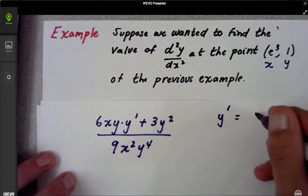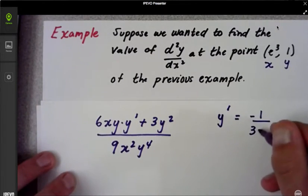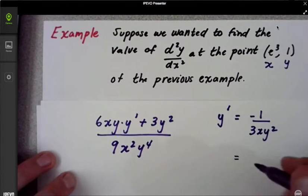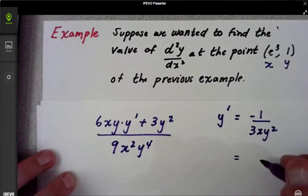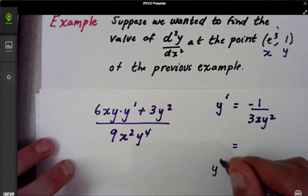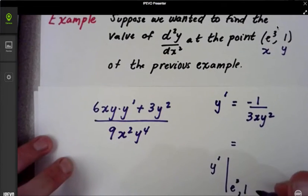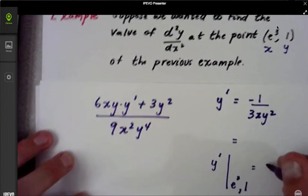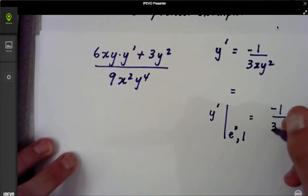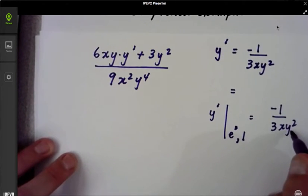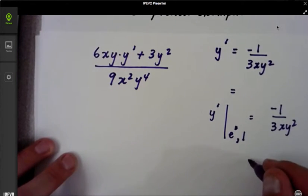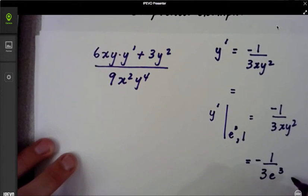Now y prime was equal to negative 1 over 3xy squared. Well, you can go ahead and plug that in. And if we found y prime, y prime of this e cubed comma 1, if you want to do the correct notation you'd have negative 1 over 3xy squared. You plug in e cubed for x and 1 for y and you're going to be left with negative 1 over 3e cubed. Now you've got that answer and so what you do now is plug in to this.